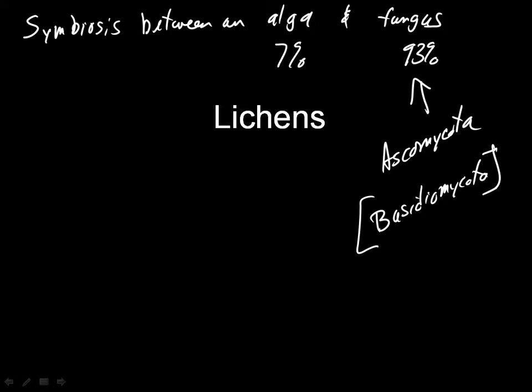The structure of the fungus determines the structure of the lichen, because there's so much fungus there. But if you separate the lichen and the fungus — and in some cases you can do that — the fungus looks nothing like the lichen. So grown alone, the fungus and the lichen look completely different.